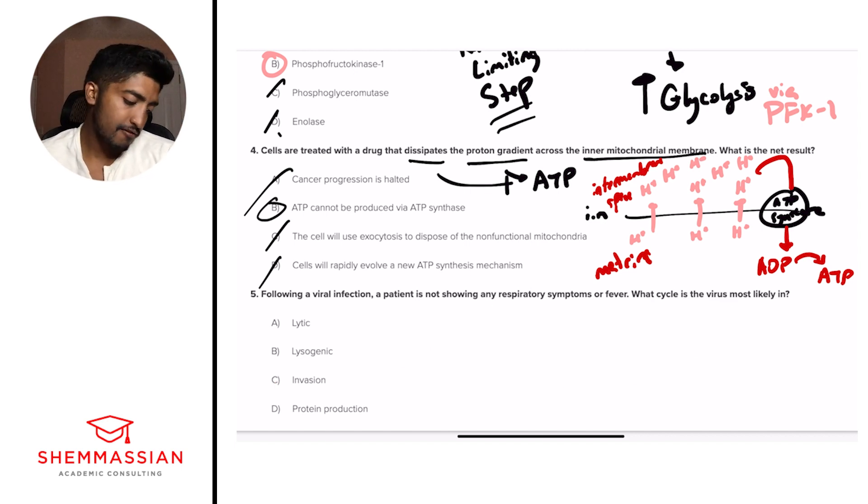All right, question number five. Following a viral infection, a patient is not showing any respiratory symptoms or fever. What cycle is the virus most likely in? Is it A, lytic, B, lysogenic, C, invasion, or D, protein production? All right, so the question is asking us pretty simply, what cycle is this describing symptoms in? And so we're looking for a virus cycle. That's the first thing. And so right away, we can eliminate C and D because these aren't cycles that we've heard of before. We're not going to waste time on them. These are discrete questions. They should be quicker. So right away, eliminate C and D. And we're down to lytic and lysogenic, the two most common viral cycles that we've learned about.